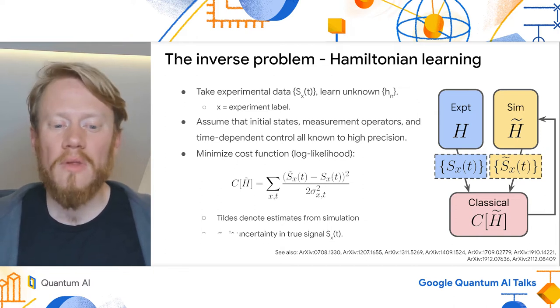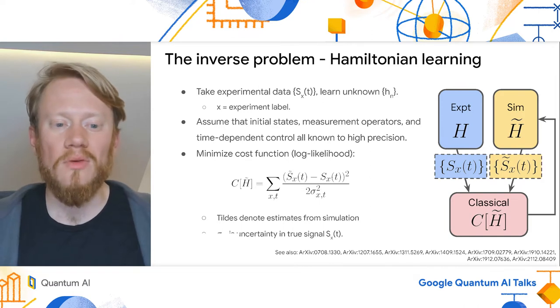And to learn, let me turn this into an optimization problem with some cost function. Probably the easiest choice of cost function is a log likelihood, which has this form here given experimental uncertainty on each point of signal data.